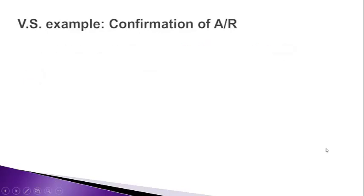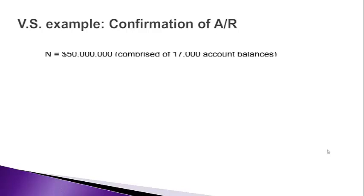As an example of variable sampling, we'll be taking a look at confirmation of accounts receivable. Let's assume there is a population of $50 million. That population of $50 million is the gross amount of accounts receivable, and it is comprised of 17,000 separate accounts. The capital N represents the population.